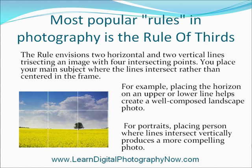The most popular rule in photography is the rule of thirds. The rule envisions two horizontal and two vertical lines trisecting an image with four intersecting points. You place your main subject where the lines intersect rather than centred in the frame. For example, placing the horizon on an upper or lower line helps create a well composed landscape photo.